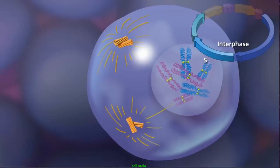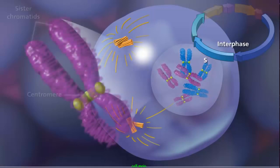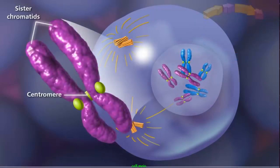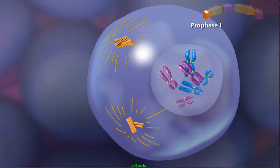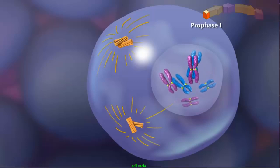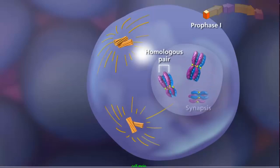Sister chromatids remain attached at the centromere and condense as the cell enters prophase I of meiosis. Up to this point, the cell looks similar to mitosis, but two events occur in meiosis that do not occur in mitosis and lead to genetic diversity. The first event occurs during prophase I, when homologous pairs of sister chromatids lie side by side in a process called synapsis, forming a tetrad or bivalent. The homologous chromosomes share similar, but not necessarily identical, genes.